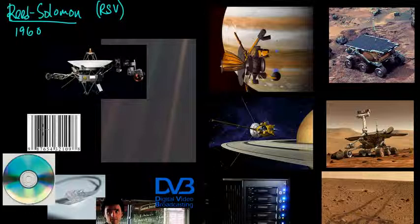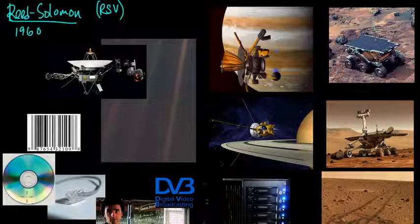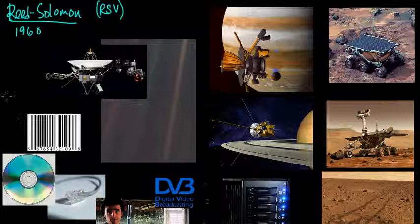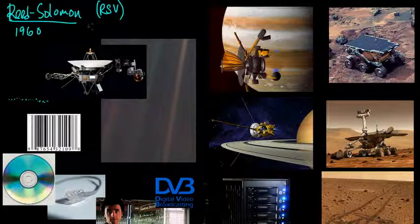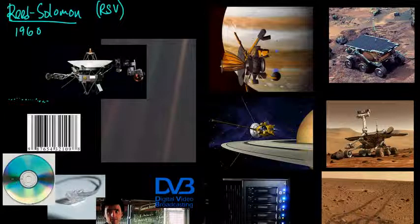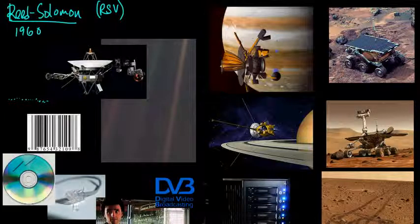Reed-Solomon is also used in every CD, DVD, or Blu-ray disc. One nice aspect of Reed-Solomon is that it's very robust to burst errors — a sequence of errors occurring one right after another — which can come up with a scratch on a CD that goes along the direction in which information is stored. These codes can correct up to 4,000 bits lost due to a scratch.